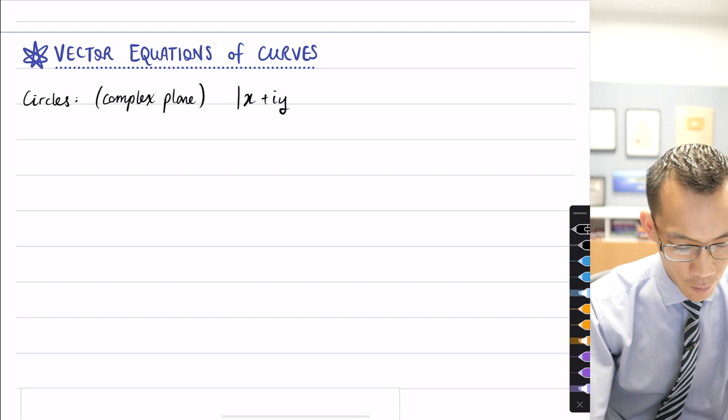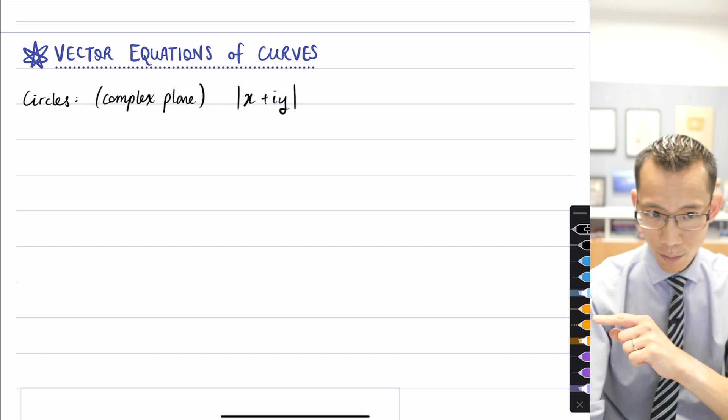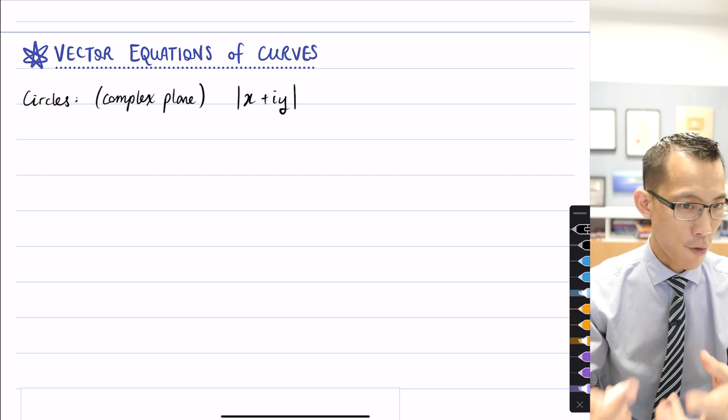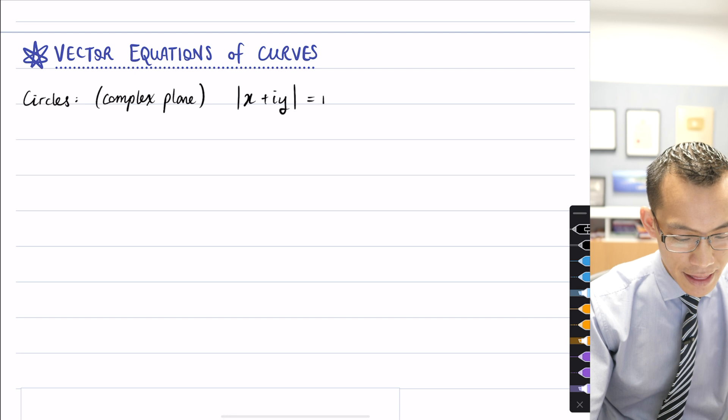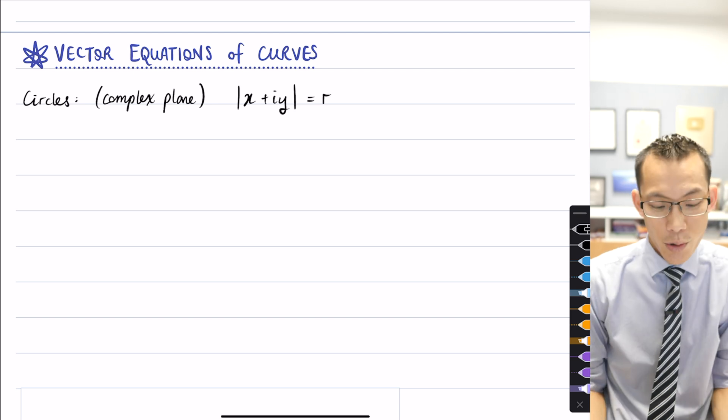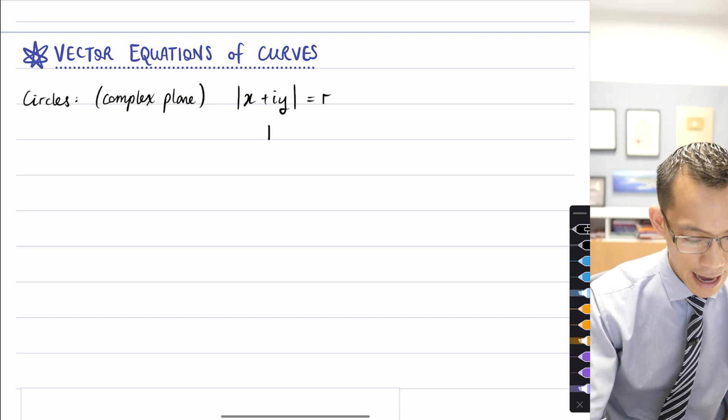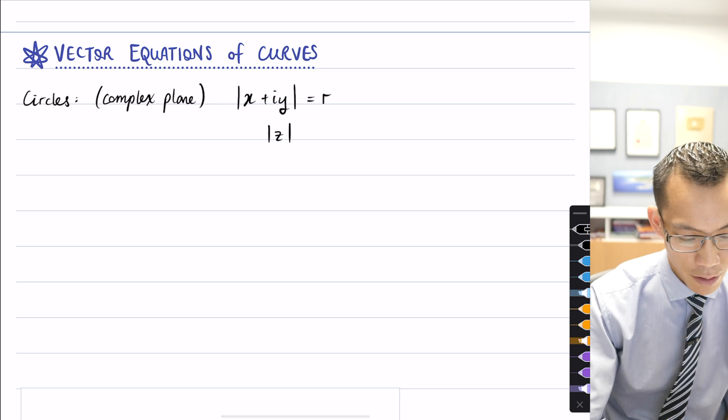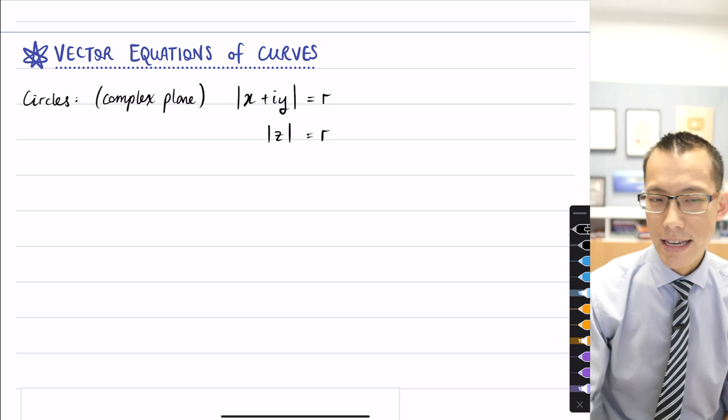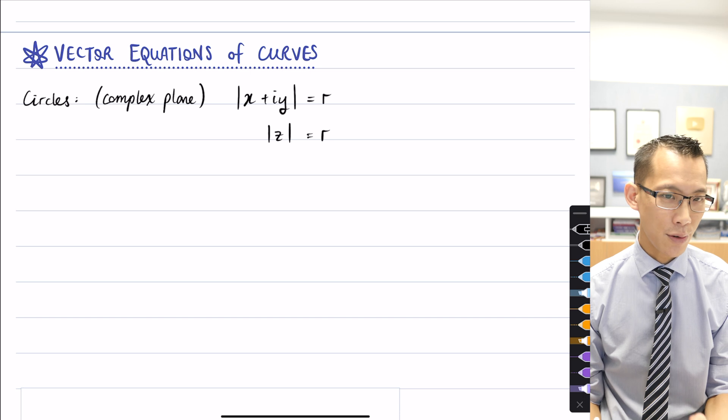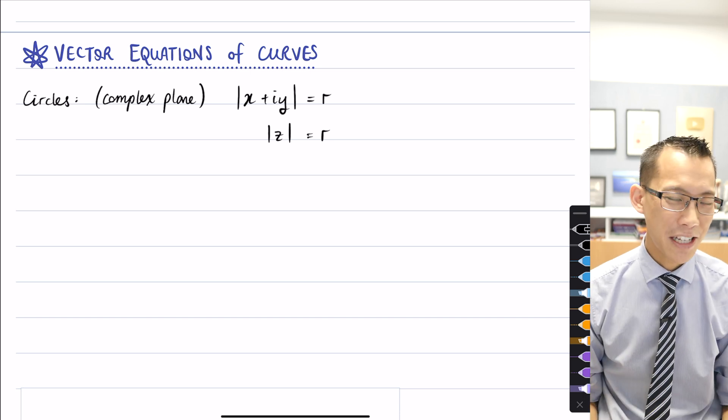So first we do want the modulus of that complex number, its distance from the origin, and then we would say that's equal to the radius. Or you could be even more succinct than that and you could just say the absolute value or the modulus of z is the radius.